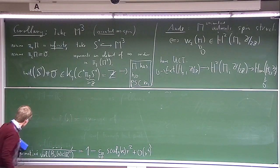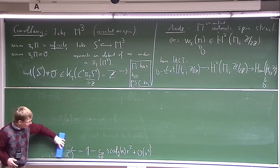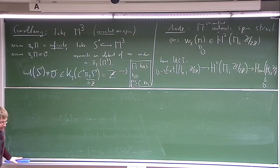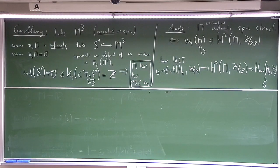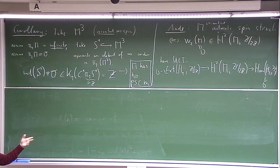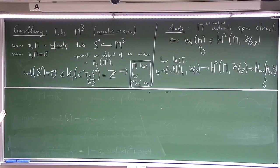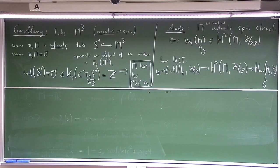The condition that π₂(M) = 0 is standard in three-dimensional manifolds and essentially tells us M with infinite fundamental group should not be S¹ × S². If one knows the solution to the Poincaré conjecture or the full Thurston conjecture, one can deal with the positive scalar curvature question for three-manifolds in different ways. But the amazing thing is that this general result was proved way before the Thurston conjecture was established by Perelman.